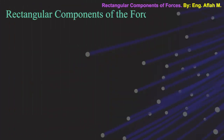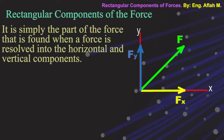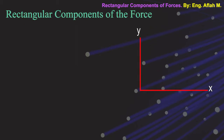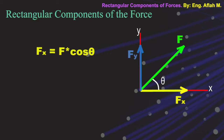What are the rectangular components of a force? It is simply the part of the force found when a force F is resolved into horizontal and vertical components. Consider a two-dimensional XY coordinate system. If a force F acts at an angle theta with the X-axis, the rectangular components FX and FY are determined by FX equals F times cosine of theta, and FY equals F times sine of theta.